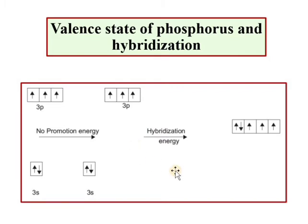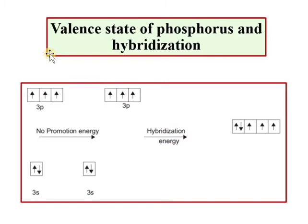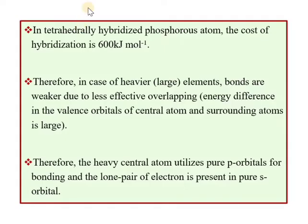So in the case of phosphorus, the 3s and 3p orbitals mix to form sp3 hybridized orbitals, and this hybridization carries an energy cost. For a tetrahedrally hybridized phosphorus atom, the cost of hybridization is approximately 600 kJ/mol. This is a very high cost for hybridization.